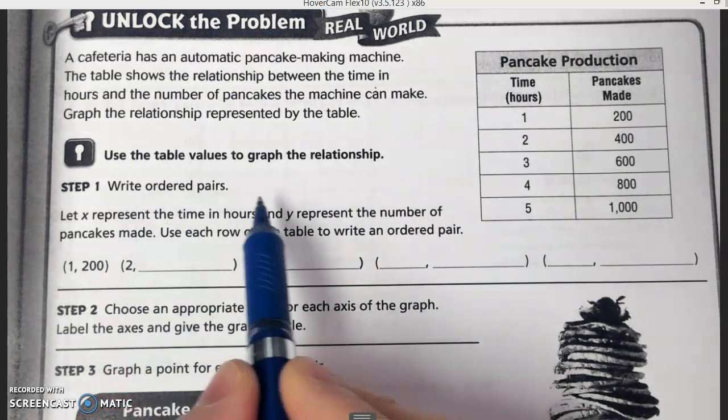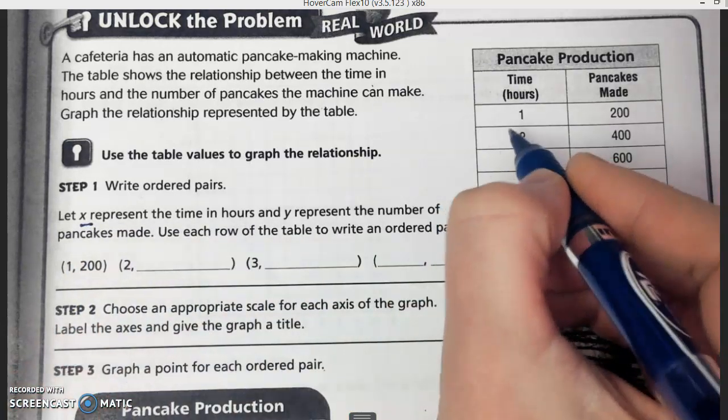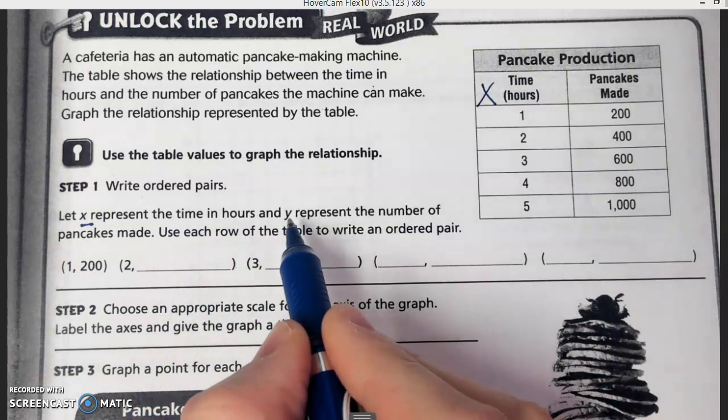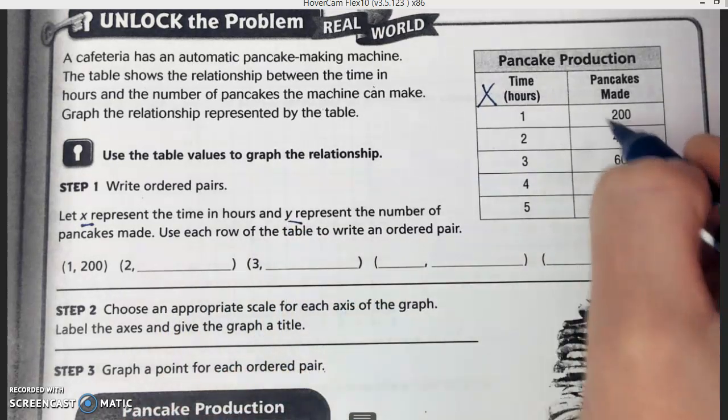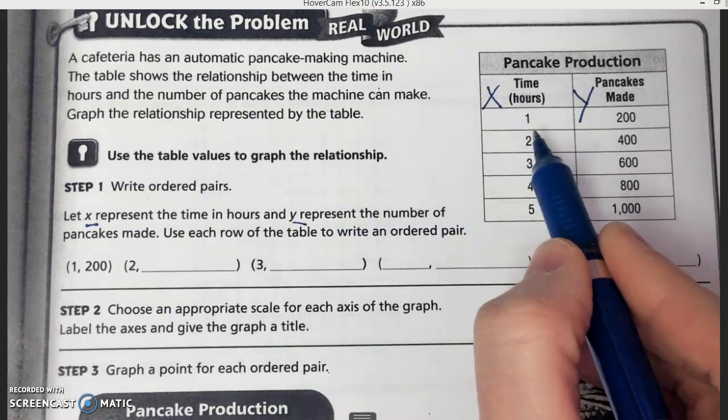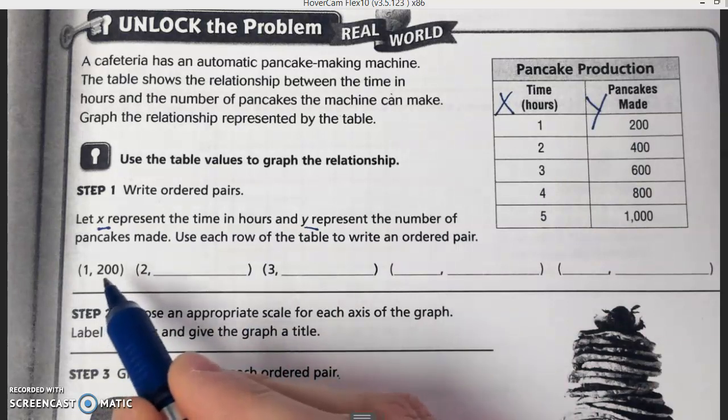First we're going to write ordered pairs. It tells us here that we're going to let X be the time in hours. So these are all our X's. And it tells us that Y is going to be the pancakes made. So these are the Y's. To make the ordered pairs, we'd have 1 for X, 200 for Y.